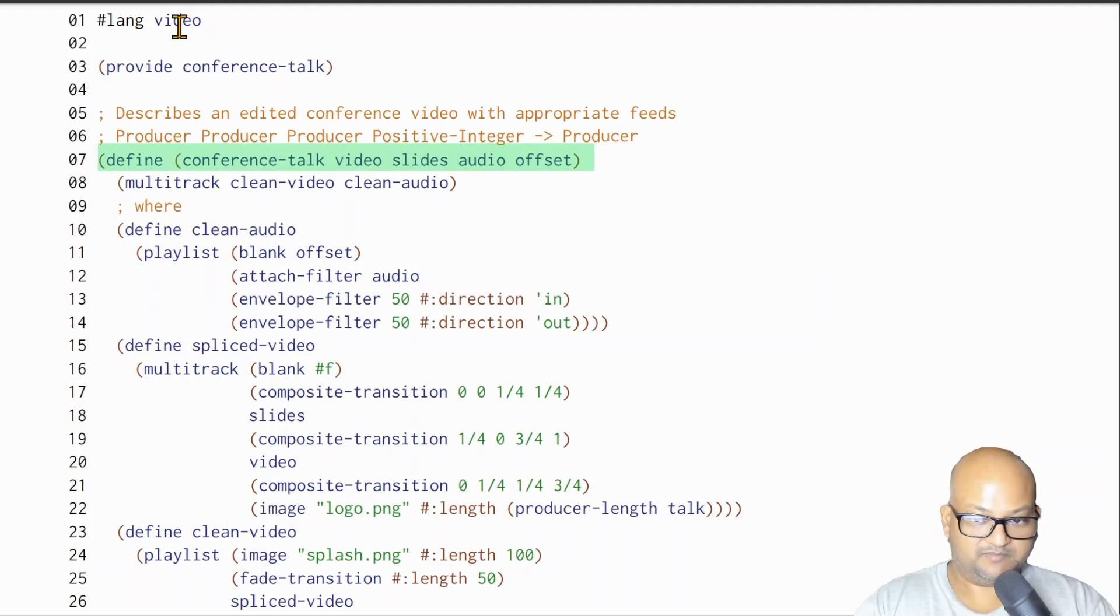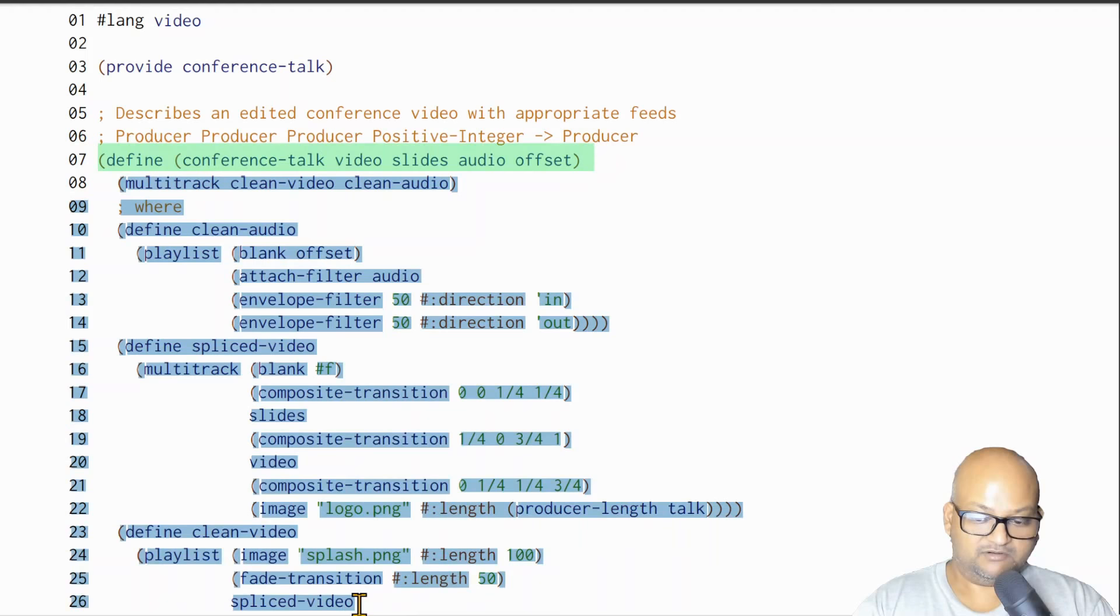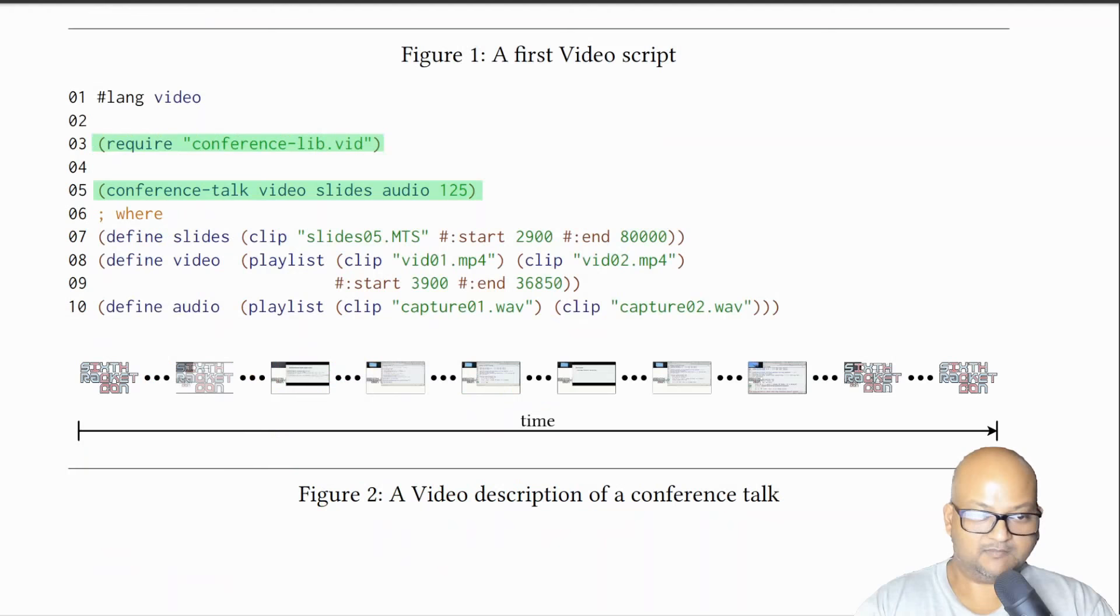So we could define a new function called conference talk and it takes as input all these raw video and audio resources and then defines in the video DSL how to create a video of it. And once we've defined that function, we can simply import that function and use it just like any other function call in racket with input parameters that specify our raw video and audio resources.